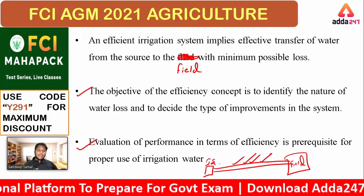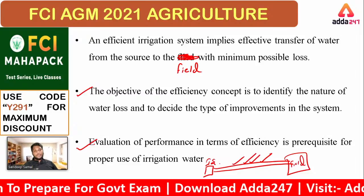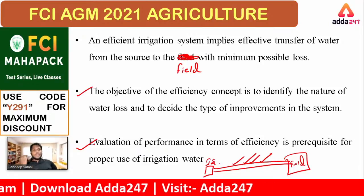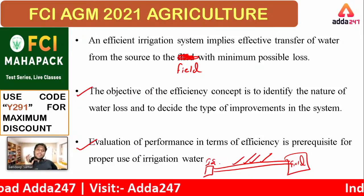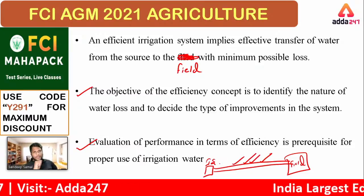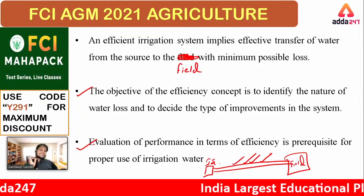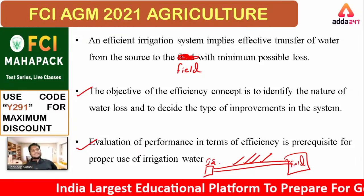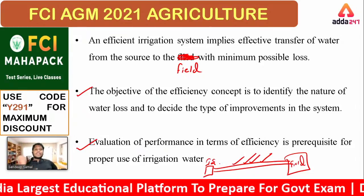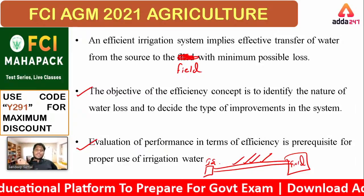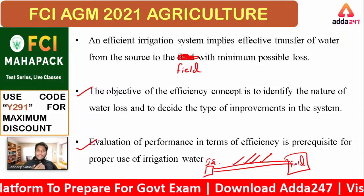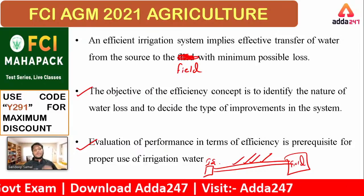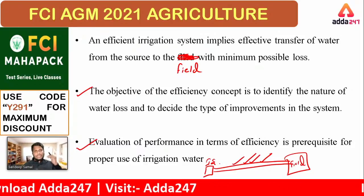Evaluation of performance in terms of efficiency is a prerequisite for proper use of irrigation water. Imagine a crop giving a lot of yield, but it requires so much water that an average small farmer cannot provide it. That crop has no use in normal conditions. So we can evaluate the performance of all crops based on how much water is required to produce the required or recommended yield.